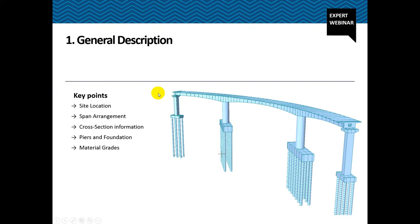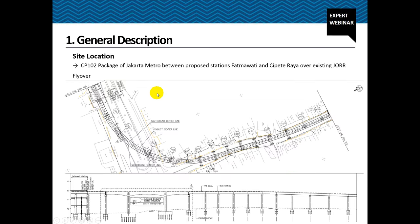Okay, so a little bit about the site itself. The bridge that we are going to take is the balanced cantilever bridge part of the Jakarta Metro CP102 package. It's between the proposed stations Fatmavati and Cipit Raya. It's over an existing flyover JORR. That's the typical span, how it looks like in plan. Horizontally curved and you have three spans with two monolithic intermediate piers. The entire structure is supported on bored piles.